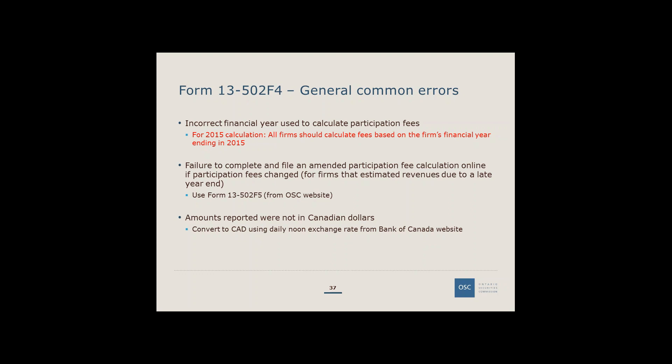Another common error is that firms with revenues denominated in a foreign currency have not been converting to Canadian dollars. Firms must convert using the daily noon exchange rate from the Bank of Canada website as of the reporting date. For example, for a March 31, 2015 year end in US currency, use the Bank of Canada daily noon rate for March 31, 2015. For firms with a December 31 year end filing before the year ends, use the Bank of Canada rate on the day you complete the form.